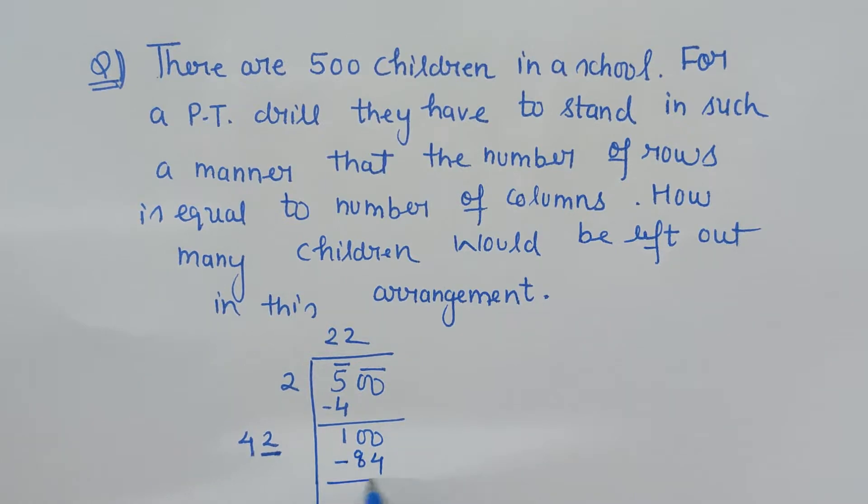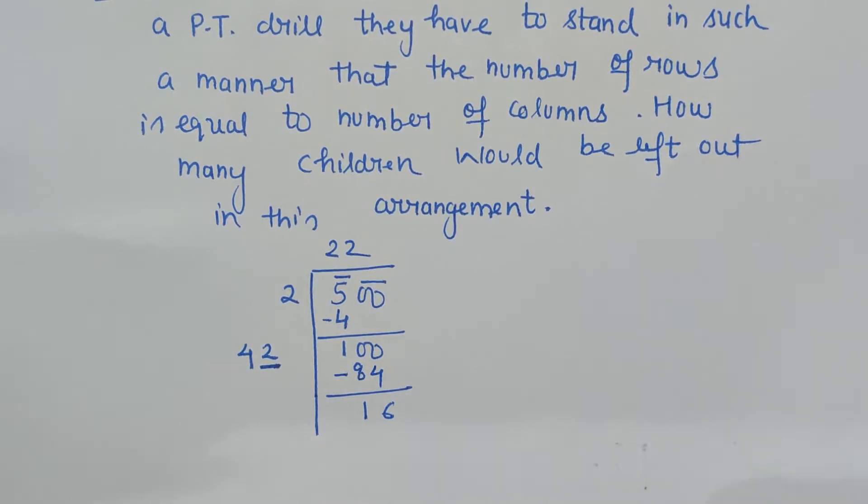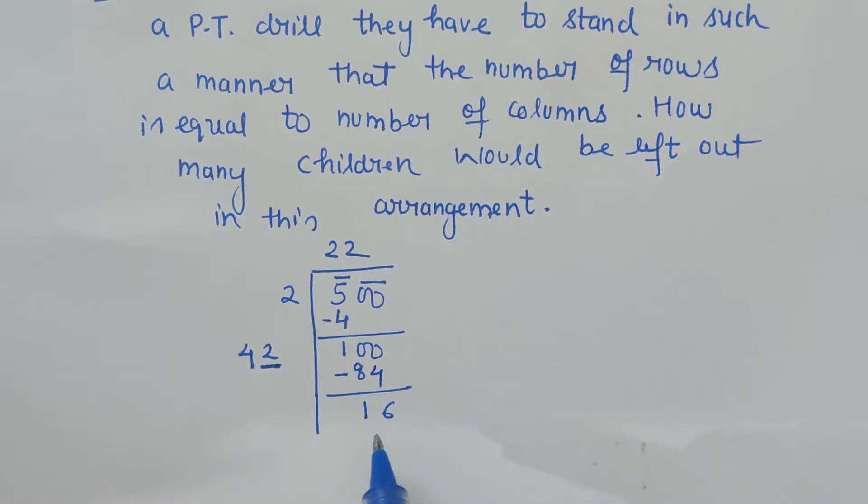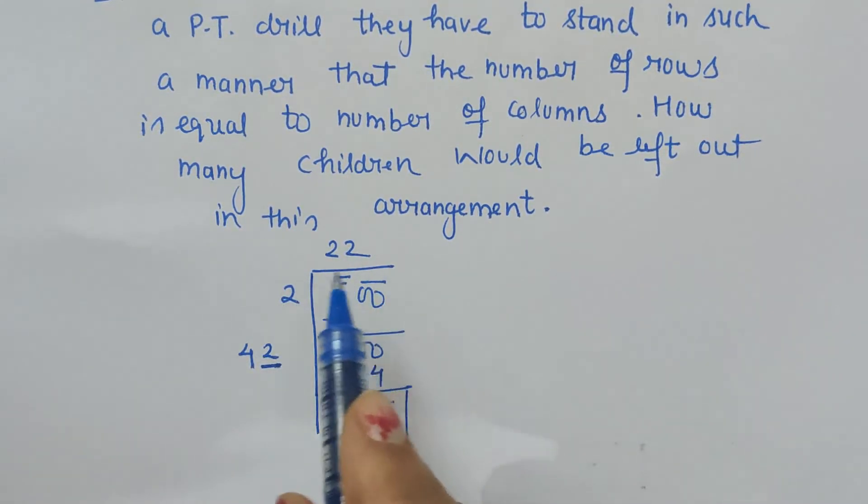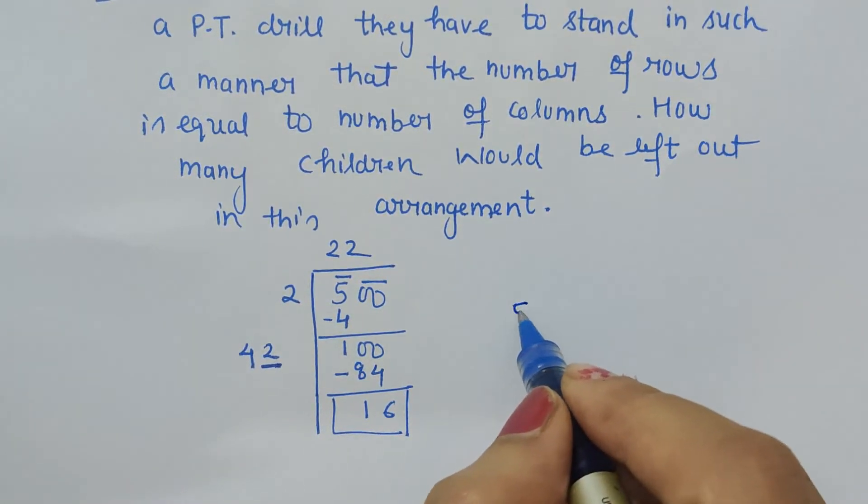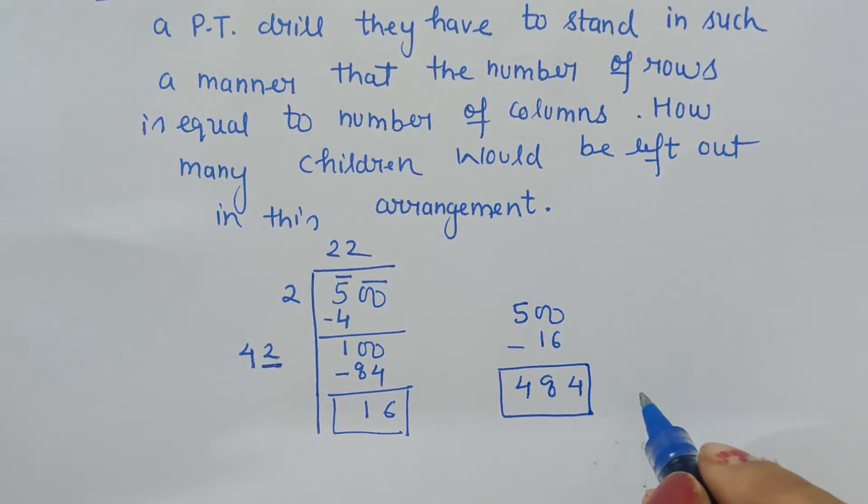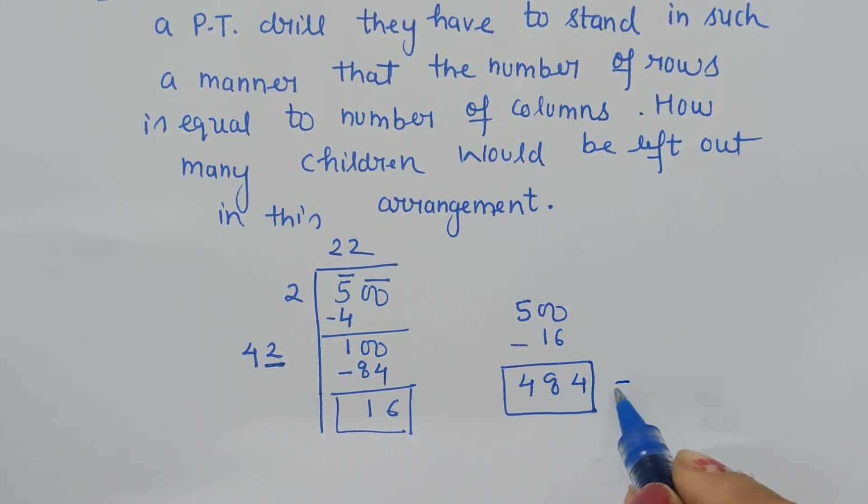The difference is 16. This means that out of 500 children, if we leave 16, only then is it possible in a PT drill to have the same number of rows and columns. We subtract 16 from 500 students to make it a perfect square. 500 minus 16 gives us 484, and it's a perfect square. 484 is the square of 22.